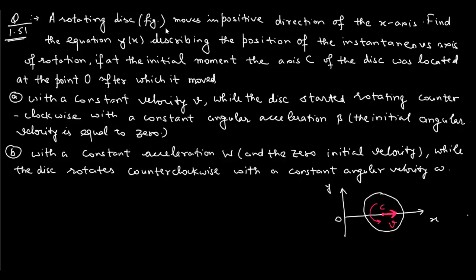A rotating disc, as shown in the figure, moves in the positive direction of the x-axis. This is the rotating disc moving in the positive direction of the x-axis. The disc is describing plane motion in the x-y plane — it is simultaneously translating and rotating about its center.